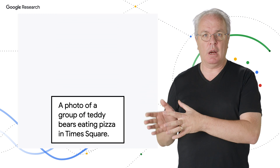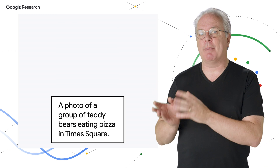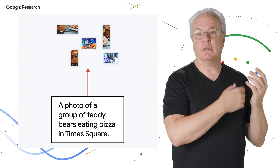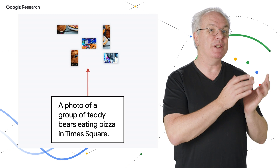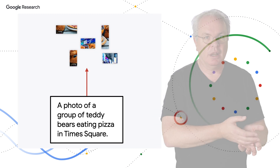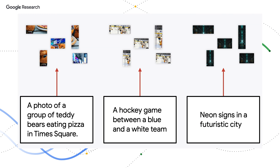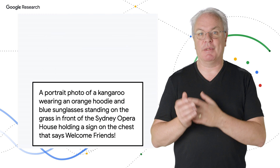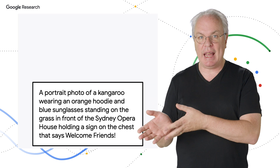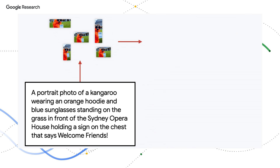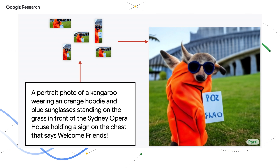So what if we use the same concept to map a sequence of text — say the caption of an image — to a sequence of tokens that represent the visual contents of that image, and then get lots of examples of these and train a model on them? Once we have this model, we can give it a set of text, and it will predict the image tokens for that text and reassemble them into an image. And that's Parti — the Pathways Auto-Regressive Text-to-Image Model.